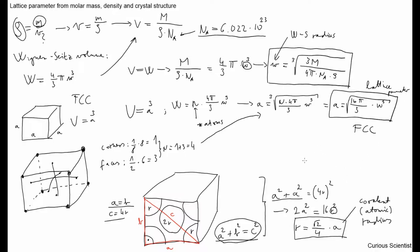To summarize: we started from the periodic table of elements, used the density and molar mass to arrive at the lattice parameter using simple geometry, and then from the lattice parameter we could obtain the covalent radius, also using simple geometry. This method can be repeated for BCC, HCP, or any other cubic structure, and I will show this in a later video.